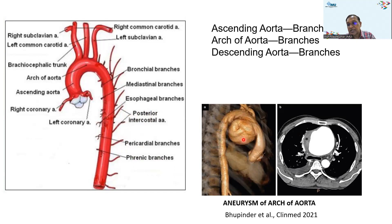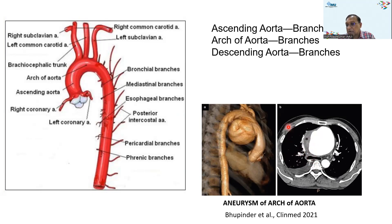A pathology of the arch of the aorta is an aneurysm — a balloon-like dilatation visible on radiographic imaging. An aneurysm of the arch of the aorta can obstruct the trachea, which lies just deep to the arch, causing problems with respiration.